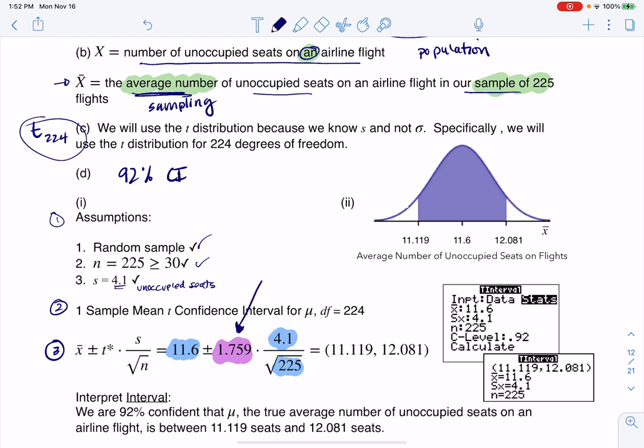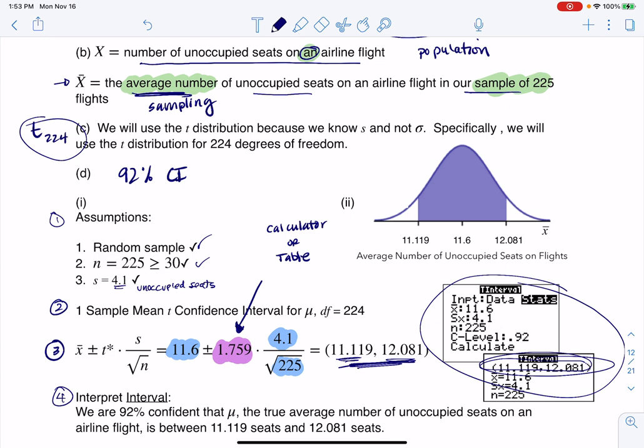I'm going to show you two different ways to do that, just depending on where you're coming from. I'm going to use the calculator, or I can use a table. I want to show you both options. If I was doing this, I mean, I actually did, I would use my calculator. You can see all my work over here. I would actually get to the answer first. I'm going 11.119 to 12.081. Those are the average number of unoccupied seats in our sample of 225 flights. You can see me interpreting it down here. We're 92% confident that the true average is between 11.119 seats and 12.081 seats.